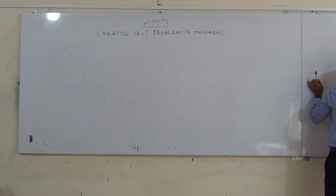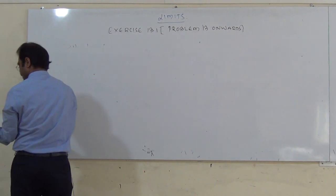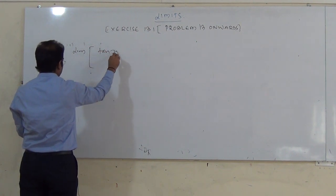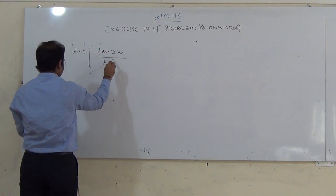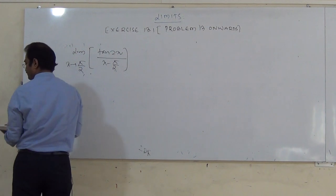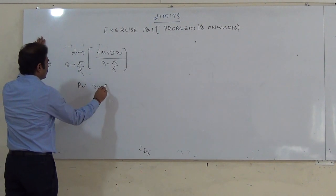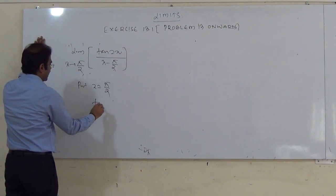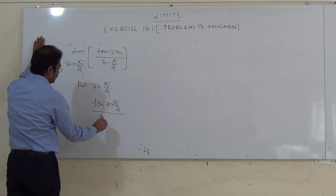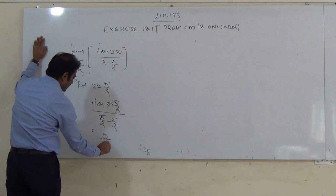Next, limit of tan(2x) / (x − π/2) as x tends to π/2. Put x = π/2: tan(2 × π/2) / (π/2 − π/2) = tan(π) / 0 = 0/0, which is IDF.